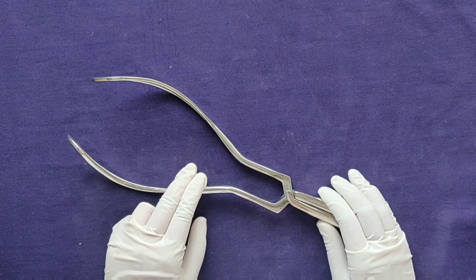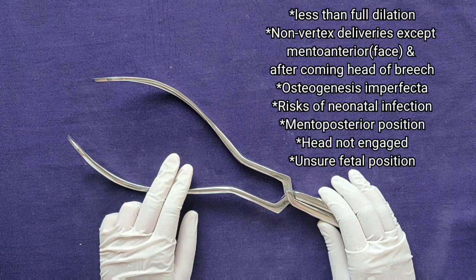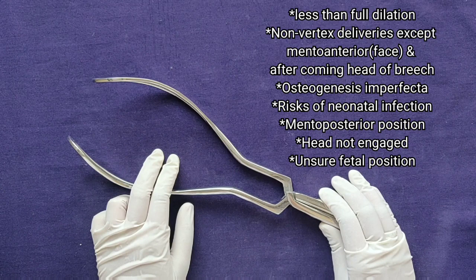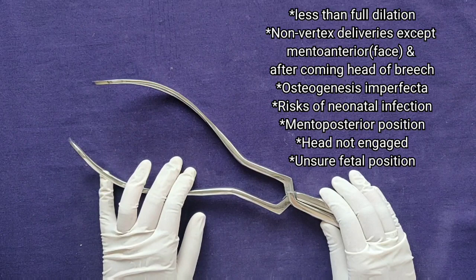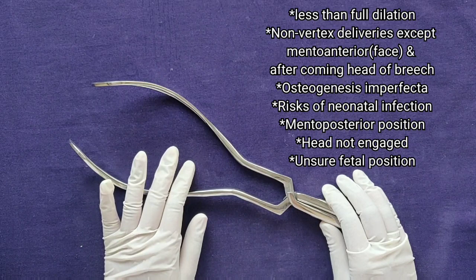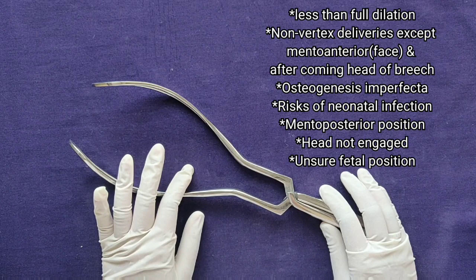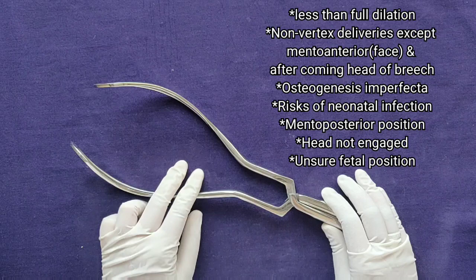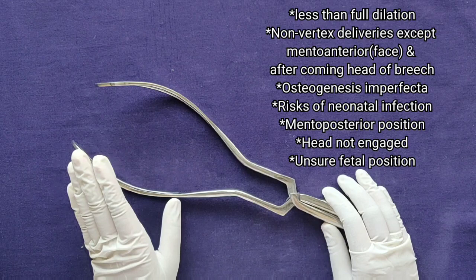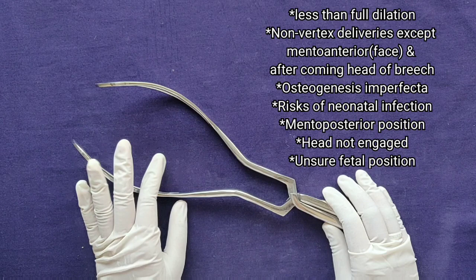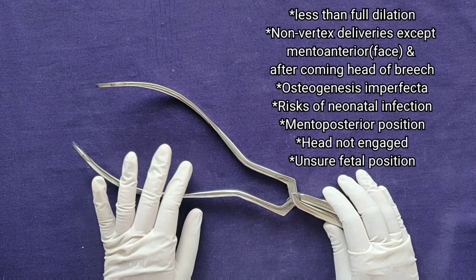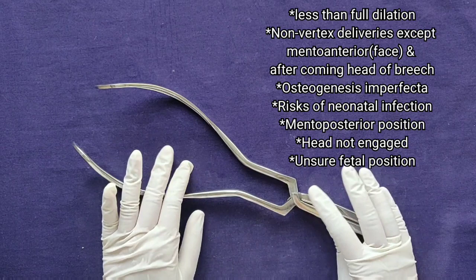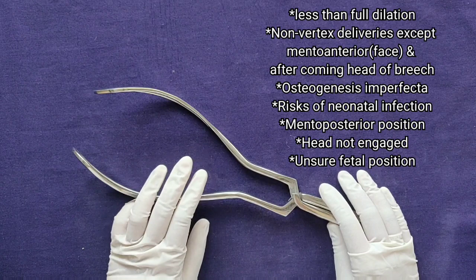Contraindications include: cervix not fully dilated — applying forceps with partial dilatation leads to serious cervical lacerations and traumatic postpartum hemorrhage. Also contraindicated in non-vertex deliveries, except face presentation in mento-anterior position and after-coming head of the breech where Piper's forceps may be used. Other contraindications include osteogenesis imperfecta of the fetus, risk of neonatal infections, unengaged head, or unknown fetal position.